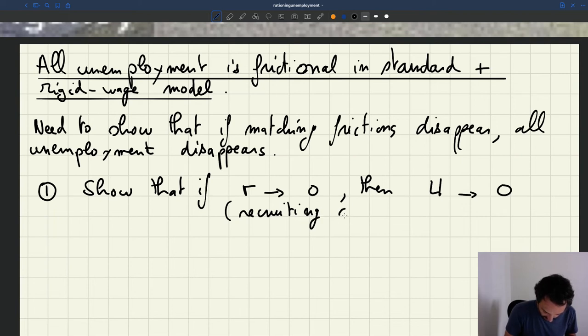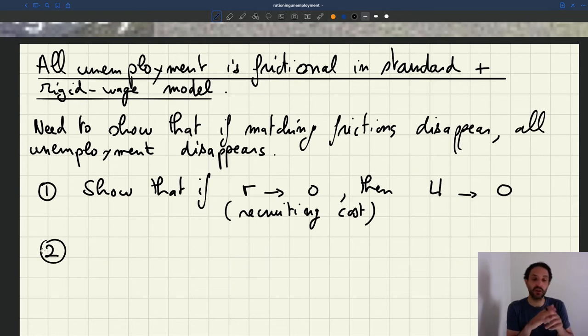And the second way to do it is to look more at the worker side. So in general, we just assume that workers search with some effort that we can normalize to one. And then it takes time for them to find a job. But one way in which you can make frictions disappear more from the worker side is by assuming that workers search with an infinite search effort.